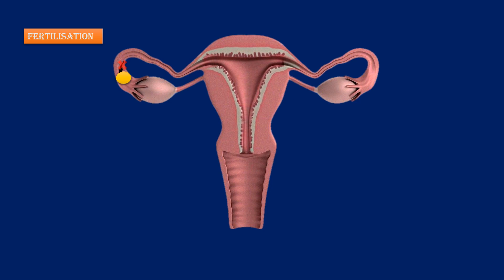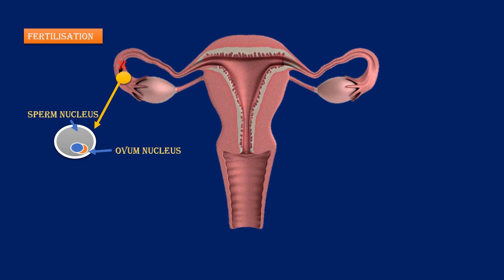Inside the fertilized ovum, there is a fusion of the genetic material of the sperm and the ovum. This results in the formation of the first cell of the baby, which is called the zygote. As the zygote travels to the uterus, a series of cell divisions occurs in the fallopian tube or the oviduct.